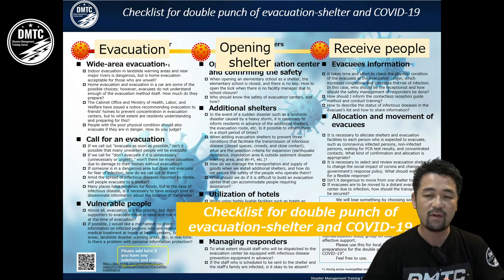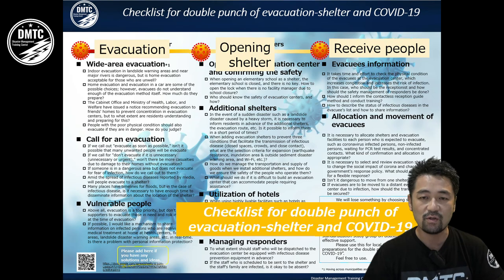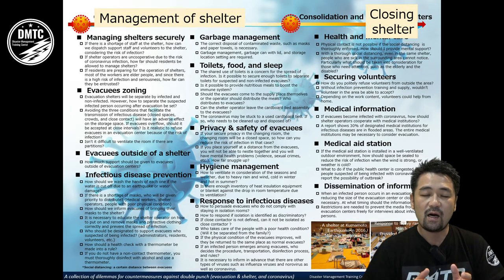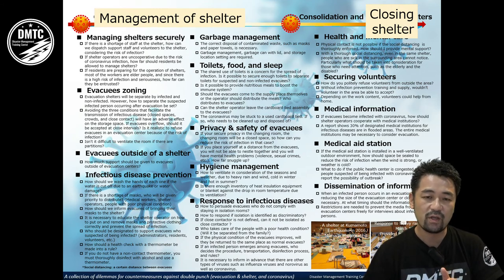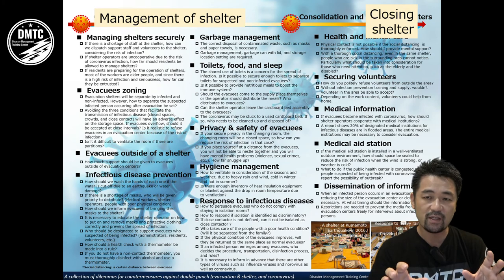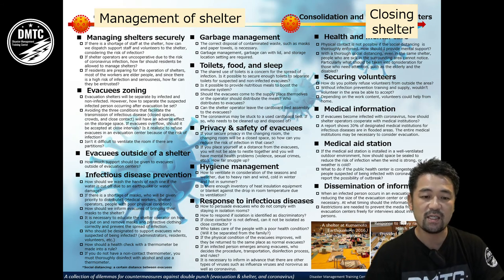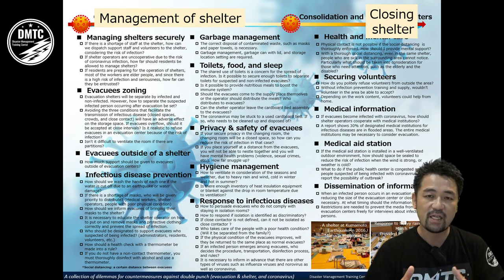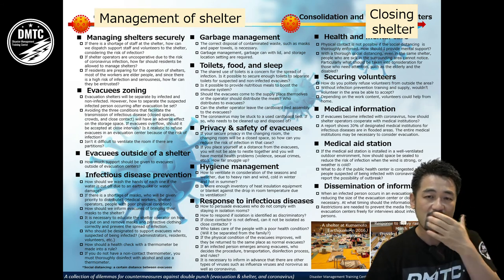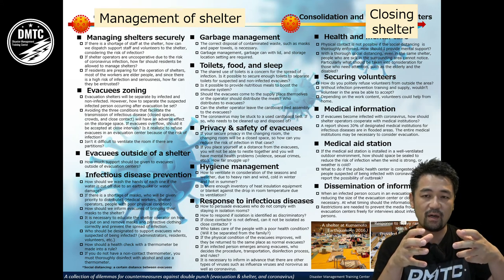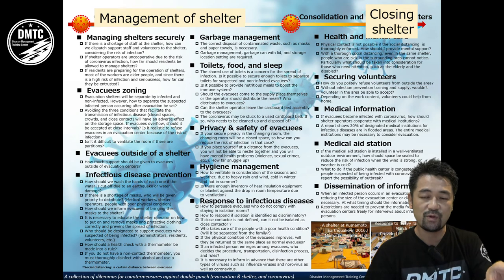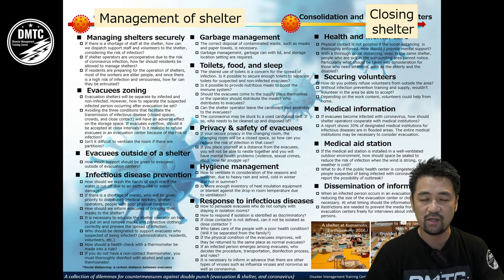After opening, people enter the shelter and we must manage information: who is here, how many people are here. We must also manage continuously. One important point is zoning — how we arrange people's spaces. Another is how to prevent COVID-19 infection. We also need to manage garbage — for example, after removing a mask, how do we properly treat and dispose of it? This is also important.